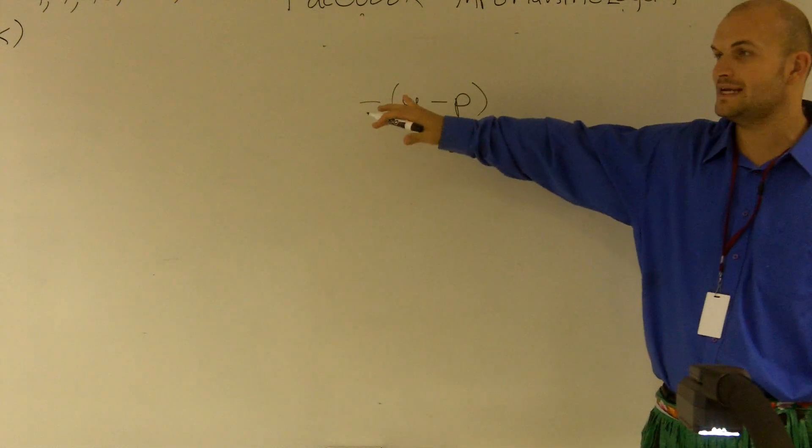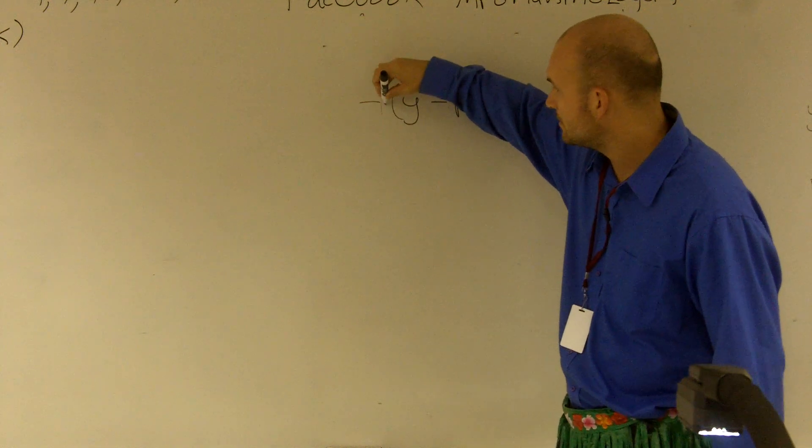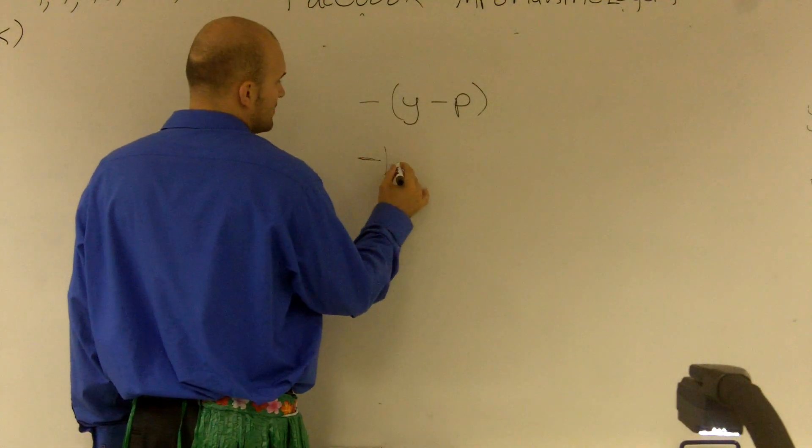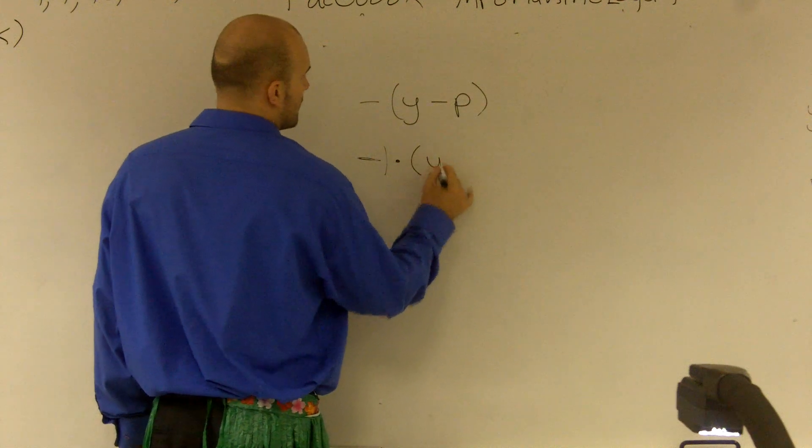Remember, if we can't see a number, we can always write in the number 1. So what I can really change this problem to is negative 1 times y minus p.